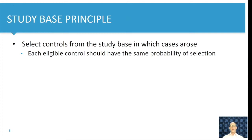So the study base principle said that control should be collected from that study base that also gave rise to the cases. So you have to ask yourself, if this control would have had the outcome, would he or she qualify as a case?